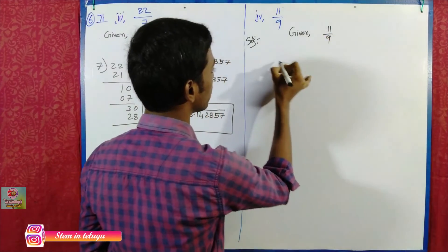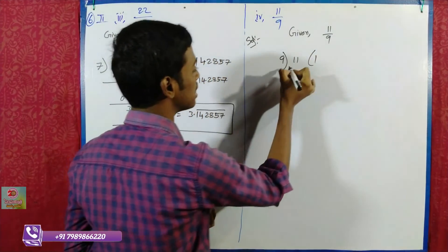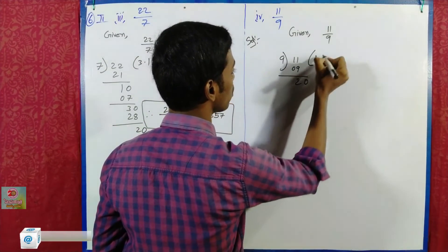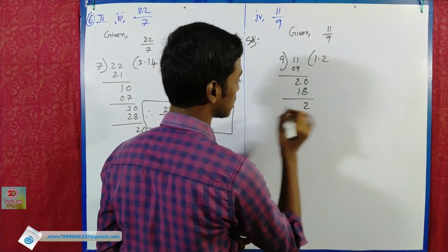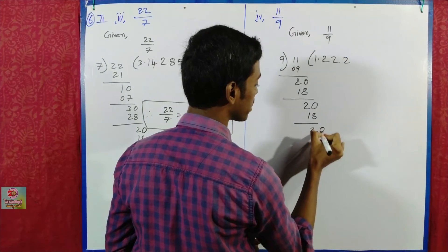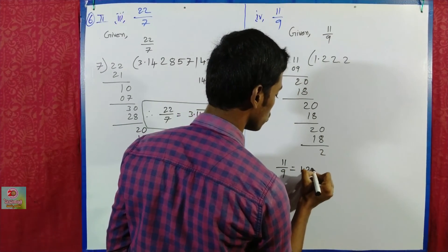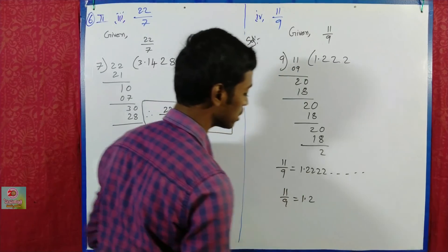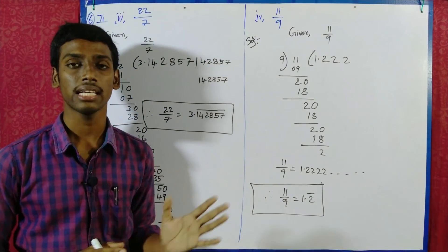Now 11 by 9. So 9 divided into 11: 1 time, remainder 2. For the counter it's 9, remainder is 10, then 0. Repeating the term: 11 by 9 is equal to 1.222... which is 1.2̄. The digit 2 repeats. Therefore, 11 by 9 is equal to 1.2̄. Thank you for watching.